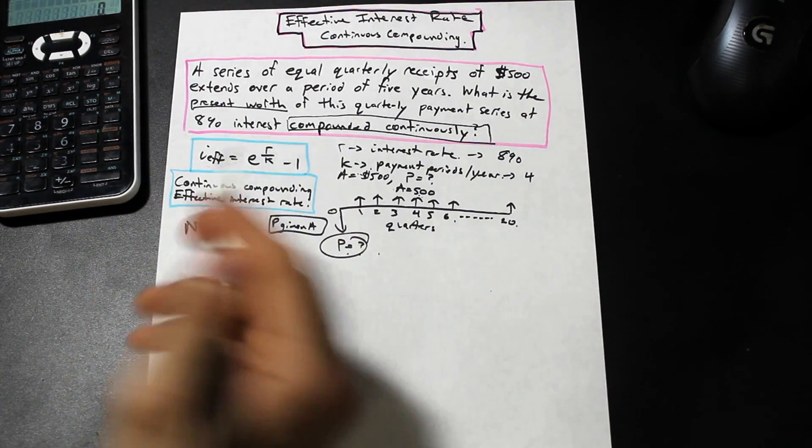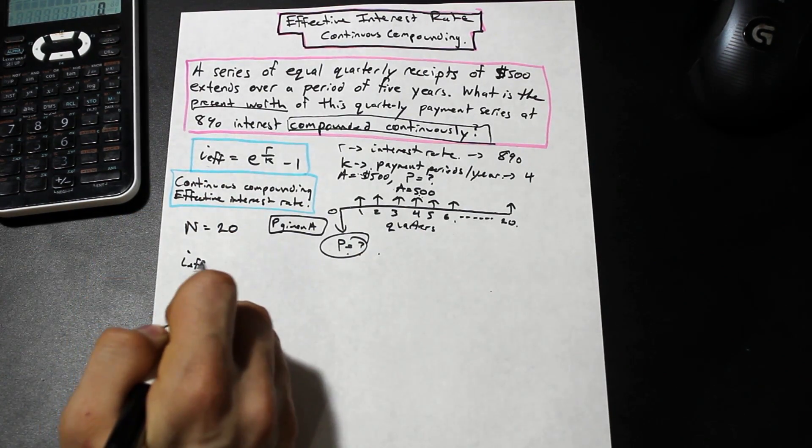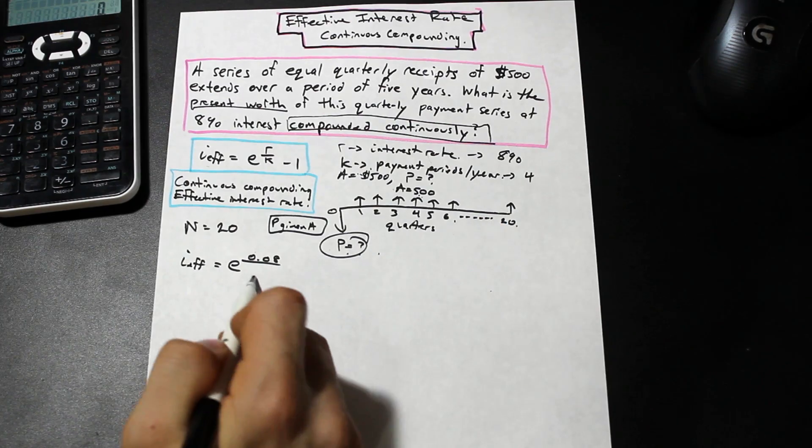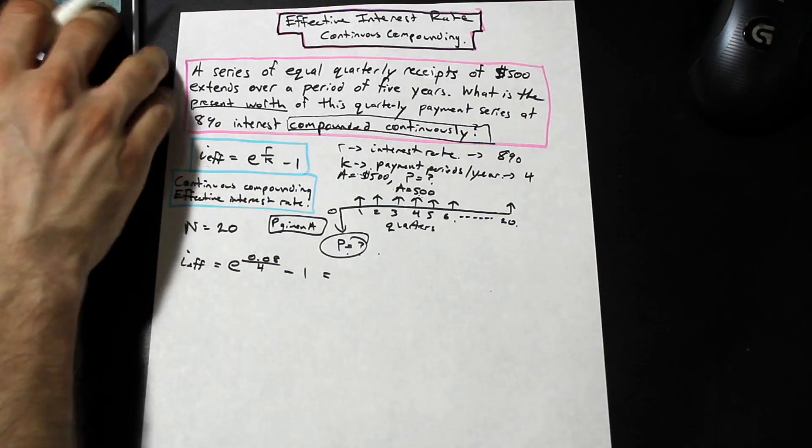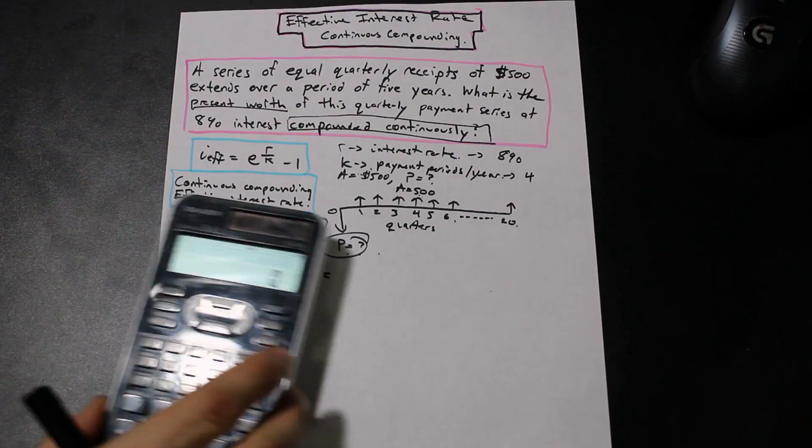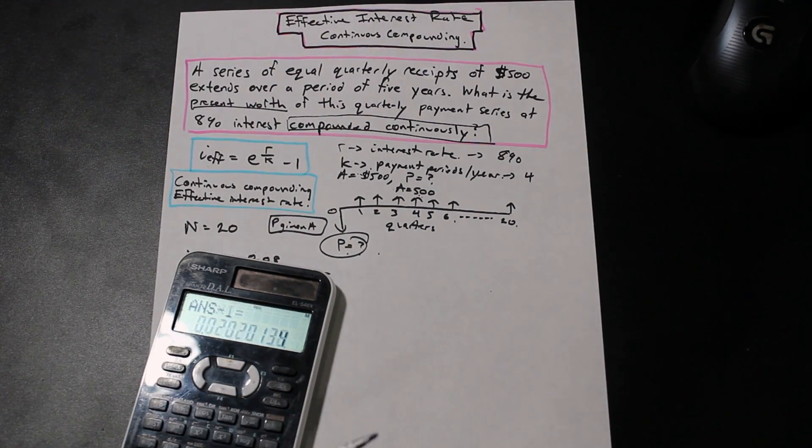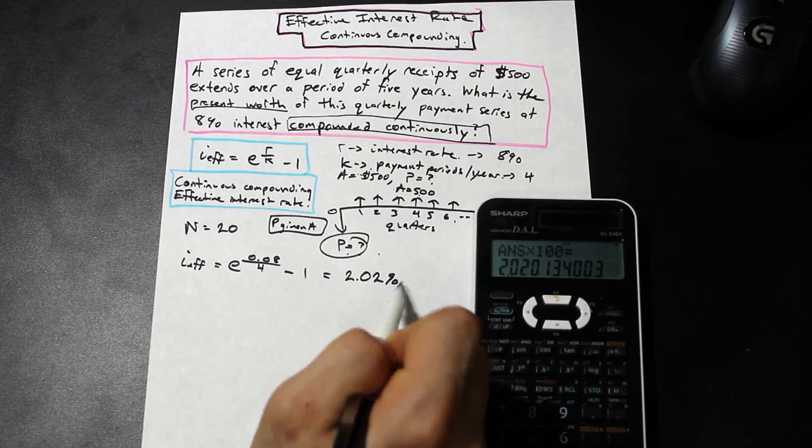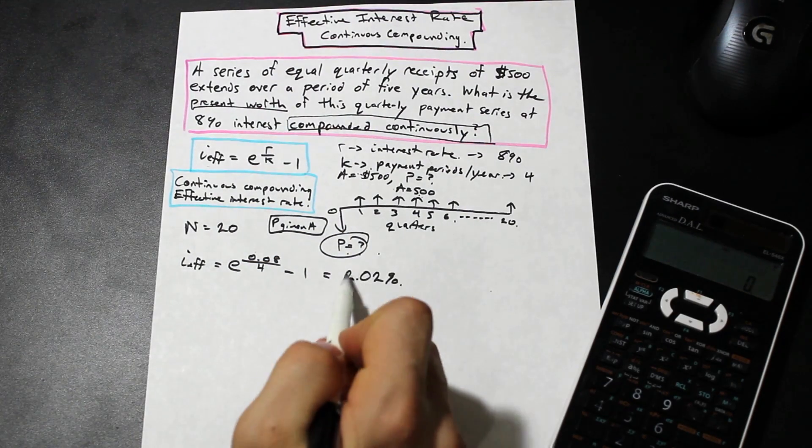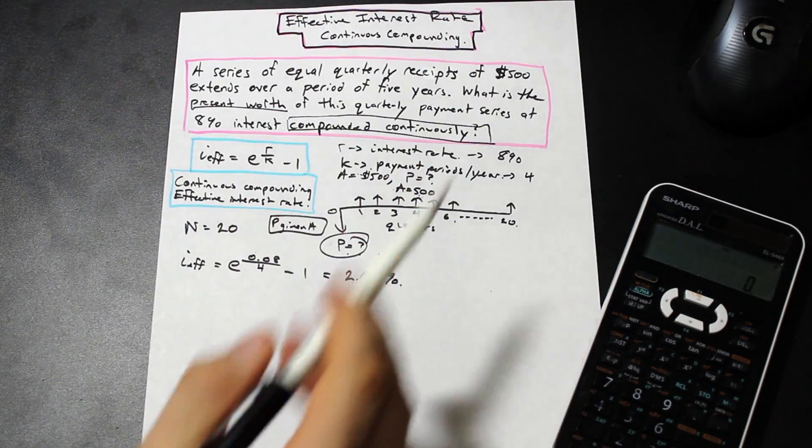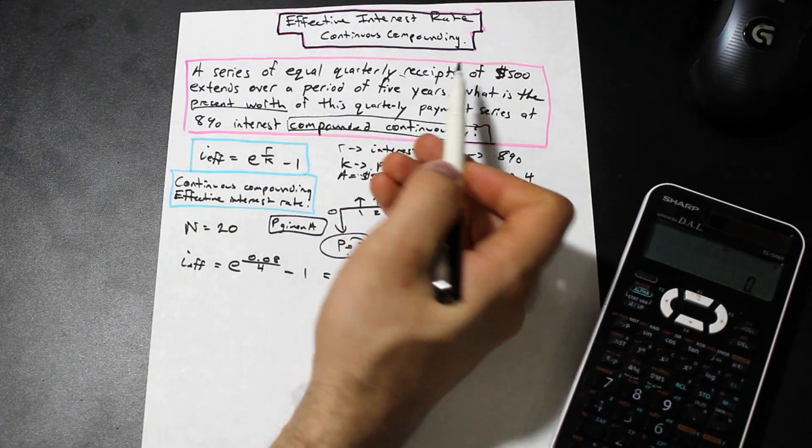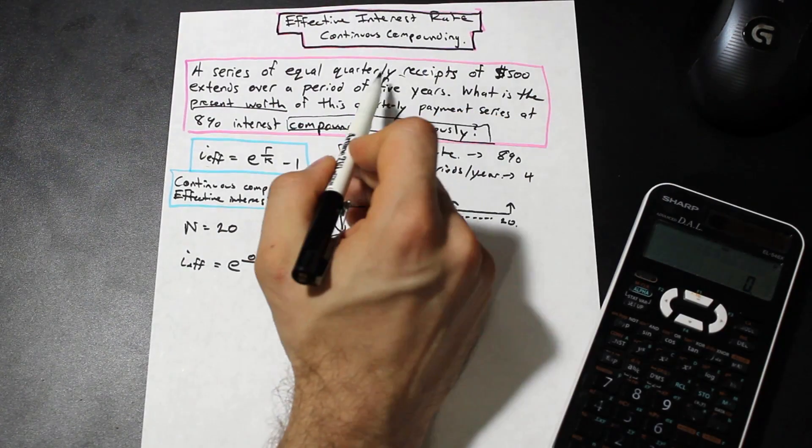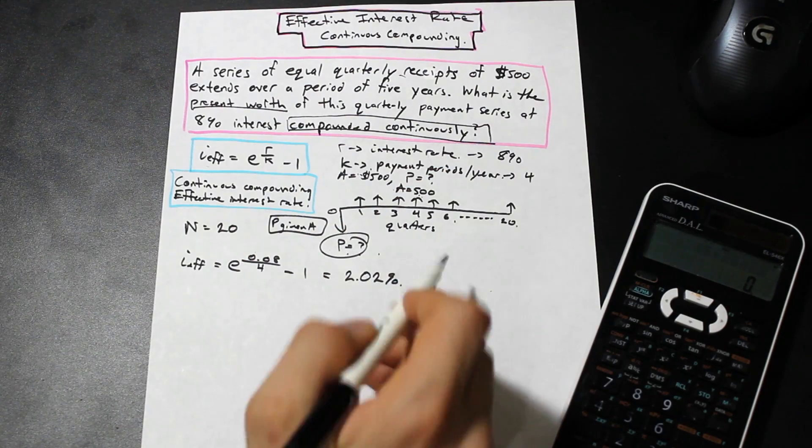So let's go ahead and use the formula to get the interest rate first. That's the first step. So our i effective is equal to e to the power of r, we have 0.08 divided by k which is 4 minus 1. And that's going to be equal to 2.02% for our effective interest rate. And if you watch the video before, you'll know that this interest rate corresponds to the payment period. So what we did is we found the interest rate that corresponds with the payment period. In this case it's quarterly receipts, so this is per quarter.